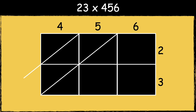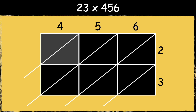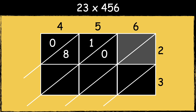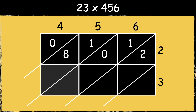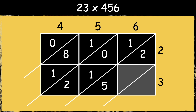Next, draw diagonal lines through the grid connecting the top corners with the opposite bottom corners across the boxes. Now we're ready to multiply. 4 times 2 is 8. Notice how each box is split into tens and ones, so each triangle has one digit. 5 times 2 is 10. 6 times 2 is 12. Next we do 4 times 3 which is 12. 5 times 3 is 15. And 6 times 3 is 18.